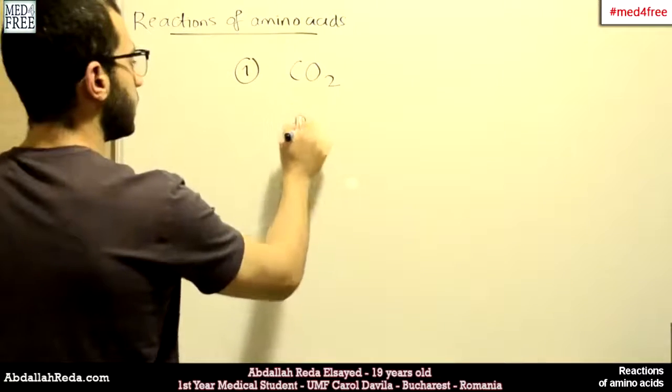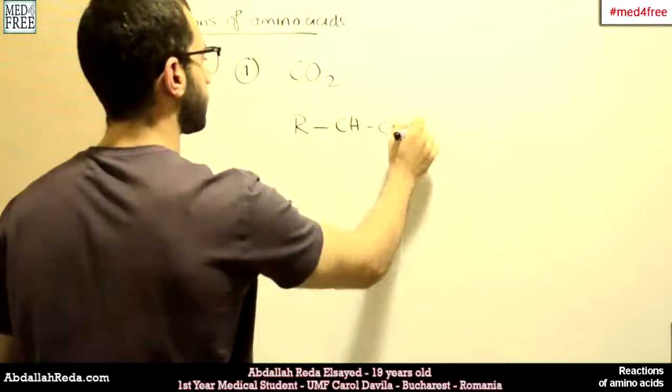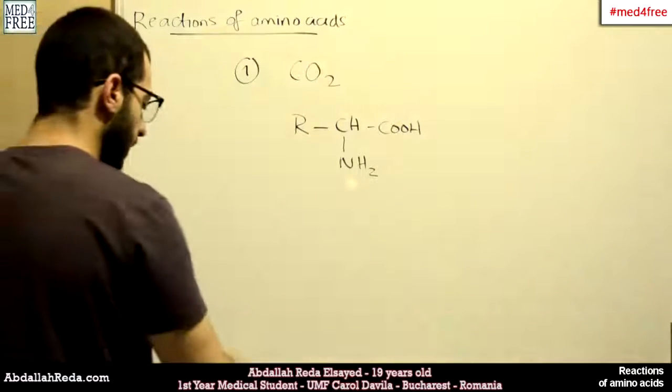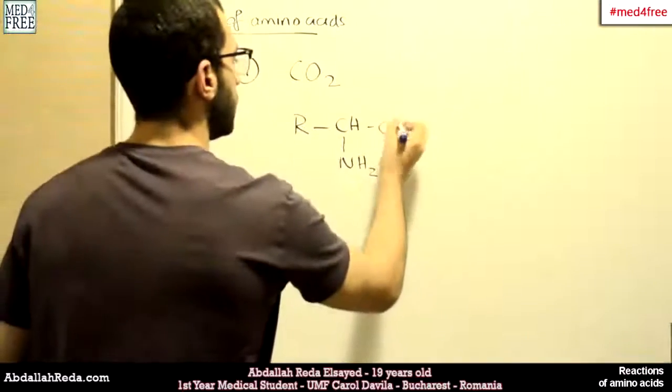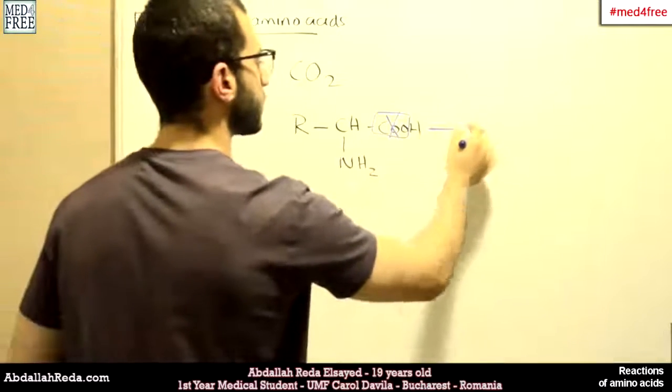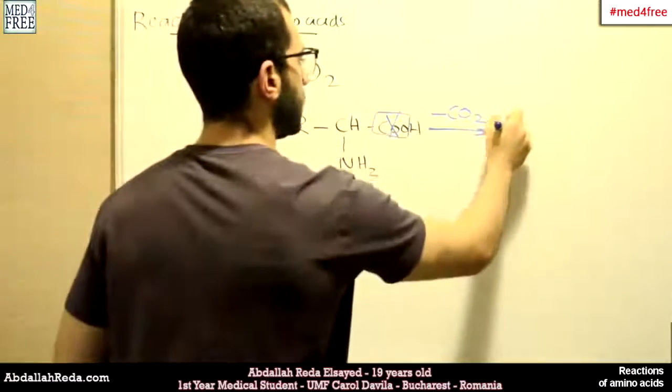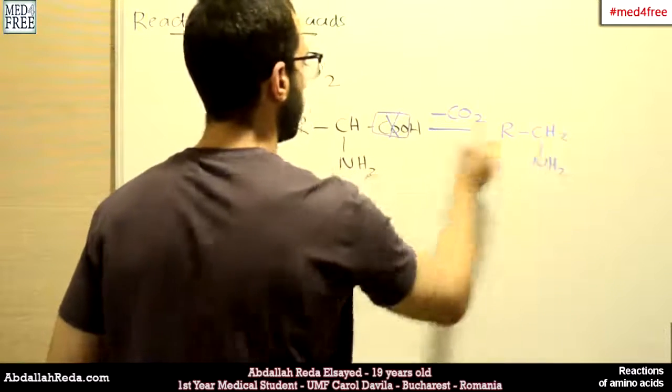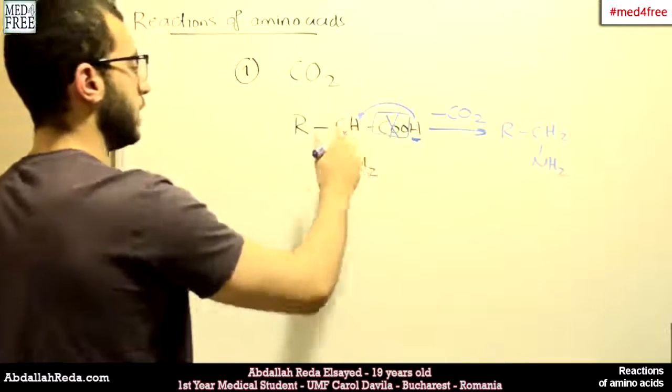We have the formula of amino acids like this. What happens is this COO, this carbon dioxide, this part, is lost. And we get something like this, CH2 and H2. It's CH2 because this hydrogen will join this other one, so it's CH2.